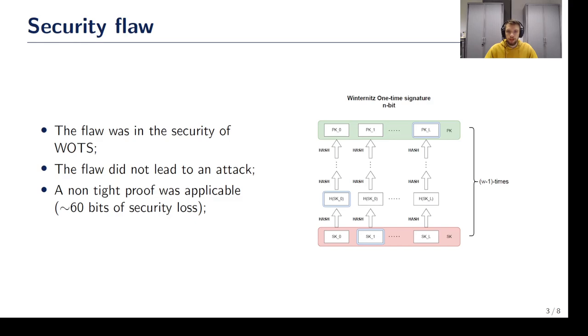The problem was in the part that proved WOTS security. WOTS is a one-time signature scheme that is used as a building block for Sphinx+. The flaw didn't lead to an attack. In fact, there was a non-tight proof that was still applicable. Using that proof would lead to less efficient scheme, since around 60 bits of security would have been lost for the proposed set of parameters.